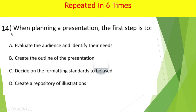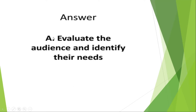Fourteen question, written in six cycles — most essential one. When planning a presentation, the first step is to: Option A: evaluate the audience and identify their needs. Option B: create the outline of the presentation. Option C: decide on the formatting standards to be used. Option D: create a repository of illustrations. The right answer will be A: evaluate the audience and identify their needs.